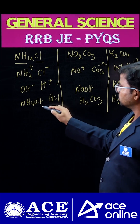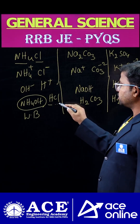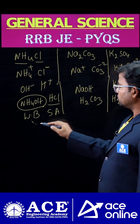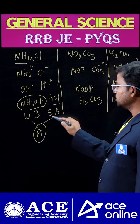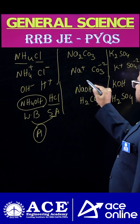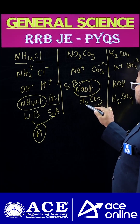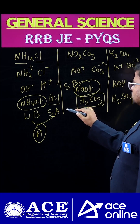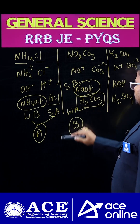NH4OH is a weak base and HCl is a strong acid. By the combination of these two, what we get is an acidic nature — because the acid is stronger compared to the base. Next, NaOH is a strong base and H2CO3 (carbonic acid) is a weak acid. So the combination gives a basic nature.